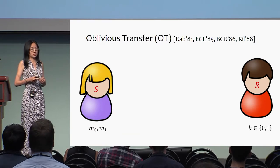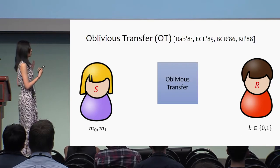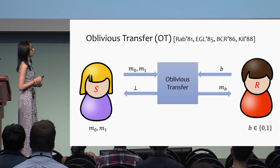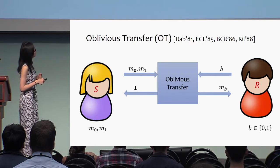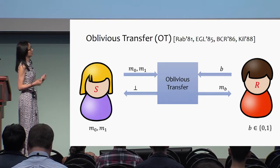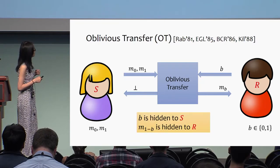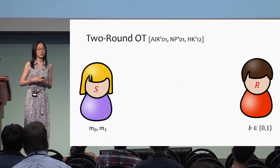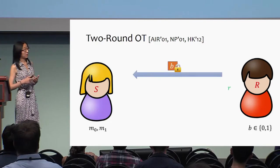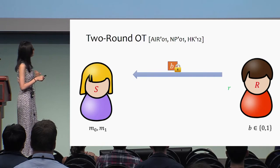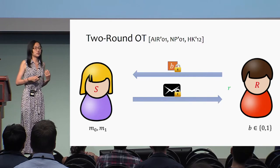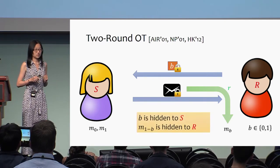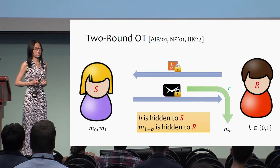The second primitive is oblivious transfer — a special MPC protocol between two parties: a sender and a receiver. The sender's input is a pair of messages (m0, m1), and the receiver's input is a single bit b. At the end of the protocol, the receiver gets one of the two messages depending on their choice bit: if b is 0 they get m0, if b is 1 they get m1. The security guarantee is that b is hidden from the sender and the other message is hidden from the receiver. Two-round OT is a special OT protocol where in the first round the receiver encrypts bit b and sends it to the sender, keeping some secret. In the second round the sender encrypts her two messages and sends them back, and the receiver recovers m_b.